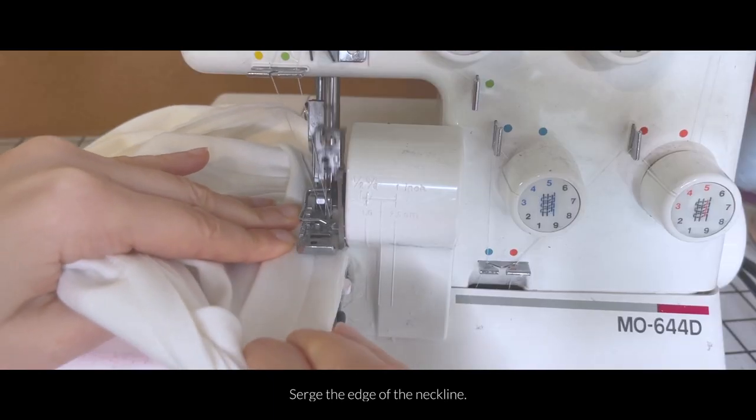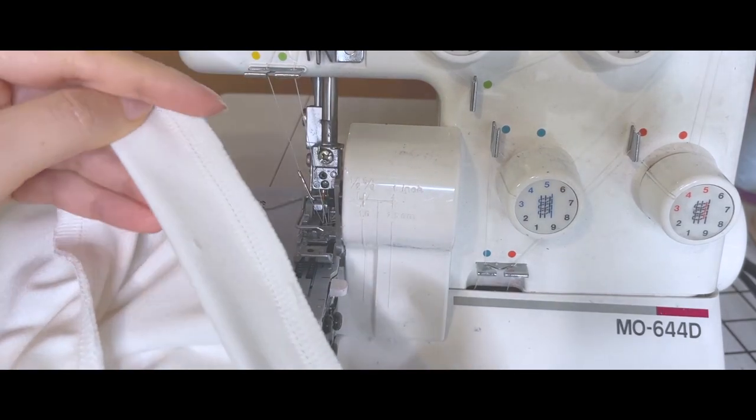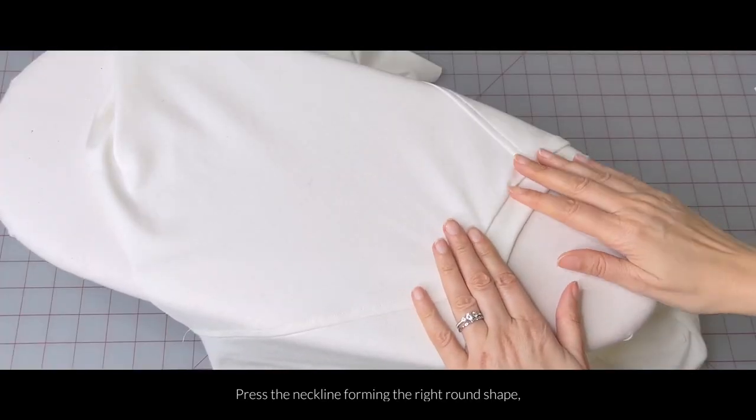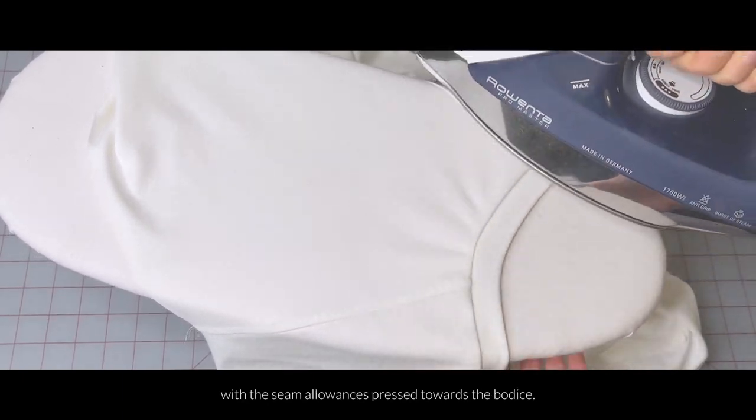Then clip the corners of the seam allowances to minimize the thickness. Serge the edge of the neckline. Press the neckline forming the right round shape with the seam allowances pressed towards the bodice.